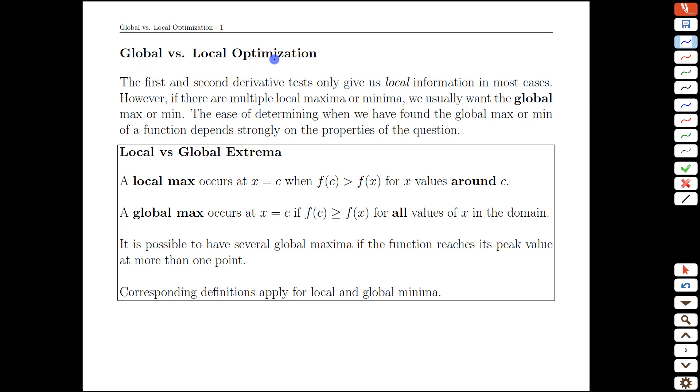When we're talking about optimization, it's important to recognize that there are two kinds of optima that we can find in a function: global and local.